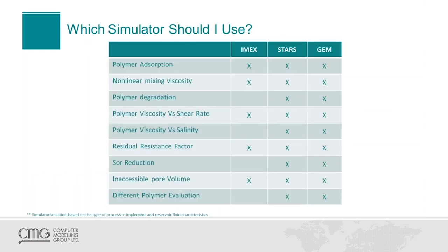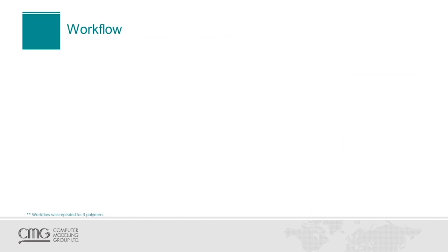Which simulator should I use? CMG has three simulators: IMEX, our black oil simulator; STARS, our K-value thermal and chemical simulator; and GEM, our equation of state compositional simulator. Both STARS and GEM can model all the effects we just described. IMEX models most of them with some exceptions — polymer degradation, polymer viscosity versus salinity, residual oil saturation reduction, and evaluating different polymers in the same run. In this case, we are going to select STARS.